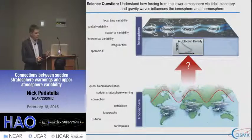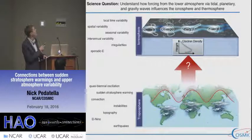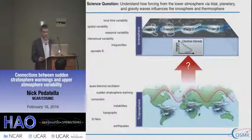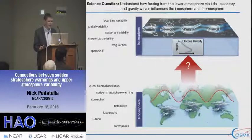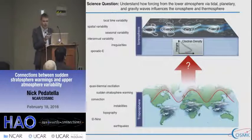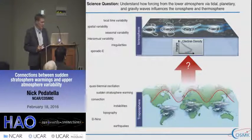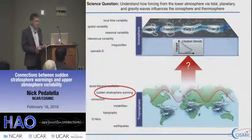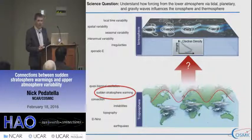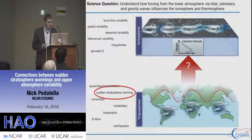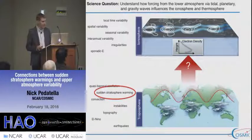In the upper atmosphere, the response to these drivers is equally diverse. You can create small-scale irregularities in the F region or sporadic E, and also variability over a wide range of spatial and temporal scales — from day-to-day variability to variability over several years. The key question is: what are the mechanisms that couple these two regions together? Today I will focus on one aspect of this, which is the sudden stratosphere warming, though what we can learn from it is applicable to other coupling mechanisms as well.